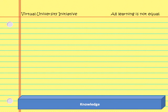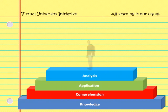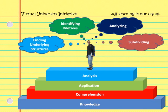When students have learned at the analysis level, they are able to break concepts down to constituent parts, analyze their structure, and recognize inherent assumptions. This level of learning is indeed considered higher order. Intellectual activities associated with analysis level learning include analyzing, subdividing, identifying motives, and finding underlying structures.